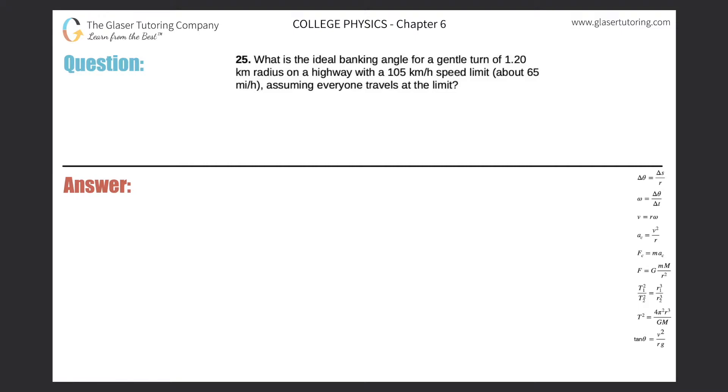Number 25: What is the ideal banking angle for a gentle turn of 1.2 kilometer radius on a highway with a 105 kilometer per hour speed limit (about 65 miles per hour), assuming everyone travels at the limit? This is asking for the banking angle, so we have a formula that details the optimal banking angle.